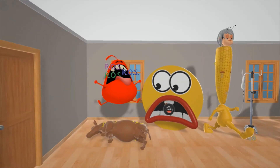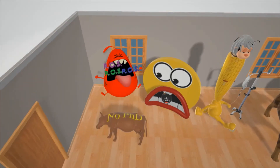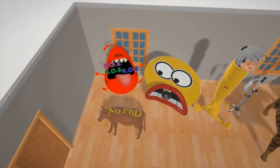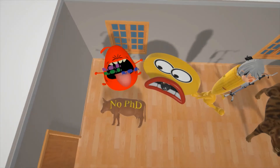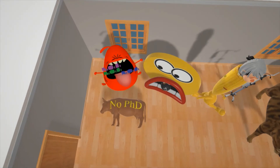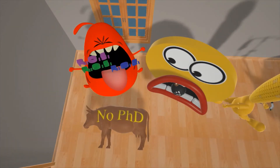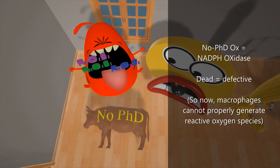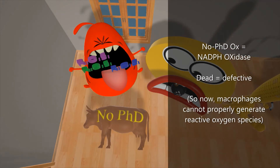Her pet ox died on the floor. This is not any random pet ox — this is a no-PhD ox. On the ox it says no-PhD. No-PhD ox stands for NADPH oxidase. And because it's dead, that's going to help us remember the defective NADPH oxidase. In chronic granulomatous disease, there's a defect in NADPH oxidase.